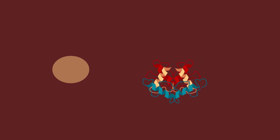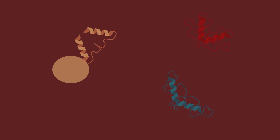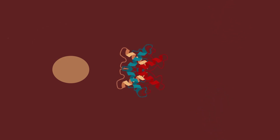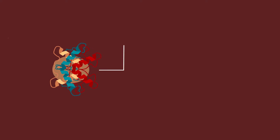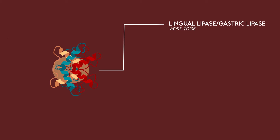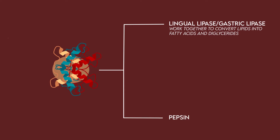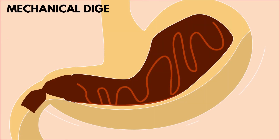Upon entering the acidic environment of the stomach, salivary amylase is denatured and deactivated. However, a new set of enzymes begin to function in chemical digestion. Lingual lipase, activated by the acidic environment, and gastric lipase, secreted by chief cells in the stomach, work together to begin to digest lipids into fatty acids and diglycerides. Pepsinogen is activated by hydrochloric acid to become pepsin, which then begins to digest proteins into peptides. Mechanical digestion of the food bolus occurs at the same time, allowing for a greater rate of overall digestion.